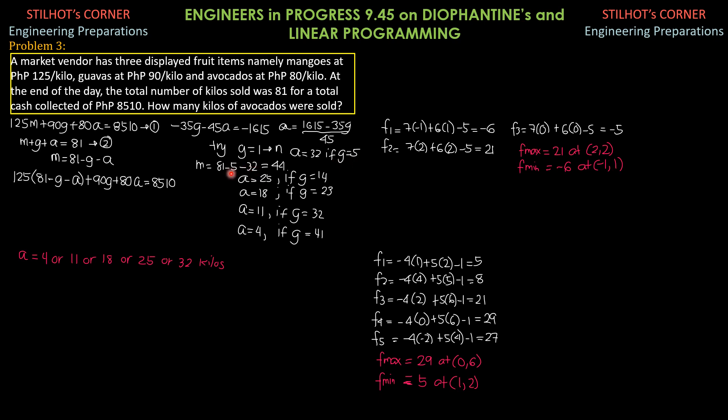M is 81 minus 5 minus 32. So, 44. Then, another possibility, A is 25 if G is 14. A is 18 if G is 23. A is 11 if G is 32. A is 4 if G is 41. Therefore, the possible number of kilos of avocados sold is 4 kilos or 11 or 18 or 25 or 32 kilos.